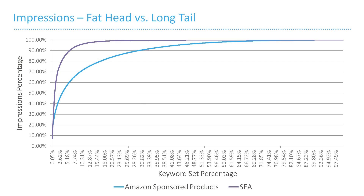This second chart tells us which percentage of our keyword set generated which percentage of the total number of impressions. To give you an example, the top 10% of the keywords generated 70% of all impressions on Amazon and 95% of all impressions on the search engines. What this chart tells us is that on Amazon, long tail search phrases and long tail keywords are more important, because in comparison to fat head keywords, they generate more traffic on Amazon than on search engines.